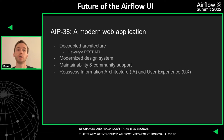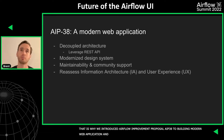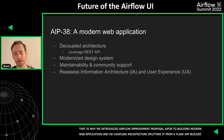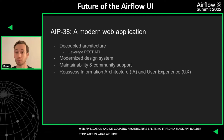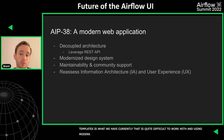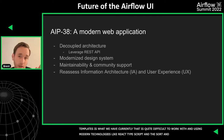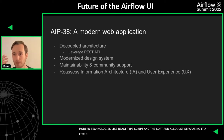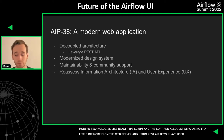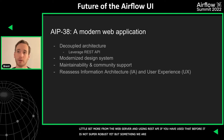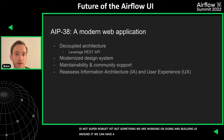That's why we introduced the Airflow Improvement Proposal AIP 38 to build a modern web application — to decouple the architecture, to split it from a Flask App Builder templates setup, which is what we have currently and is quite difficult to work with — using modern technologies like React, TypeScript, and the sort. Also to separate it a bit more from the web server and use the REST API. It's not super robust yet, but that's something we're working on. By building the UI around it, we can have a really robust UI and a really robust REST API for any other needs.